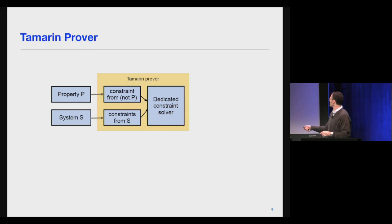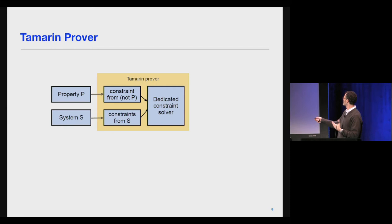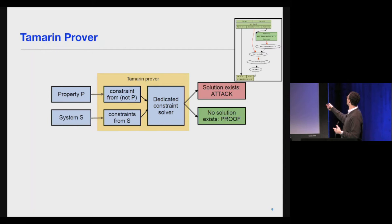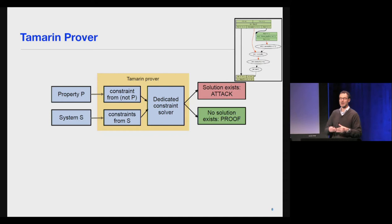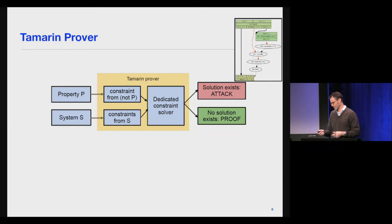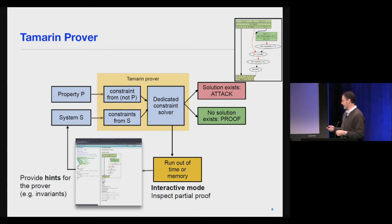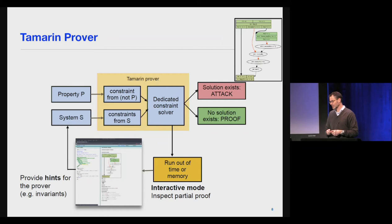In model checking, you have a specification of the system — your model — and you negate your property to find a behavior that falsifies it. In Tamarin, we use constraint solving to find such a behavior; if found, that's an attack, representable as a message sequence chart. If the constraints are inconsistent, no possible attack can exist — that constitutes a proof. Since the underlying problems are undecidable, you might run out of time or memory, in which case Tamarin allows an interactive mode where you can construct a proof manually or provide hints like auxiliary invariants or custom proof strategies called oracles.